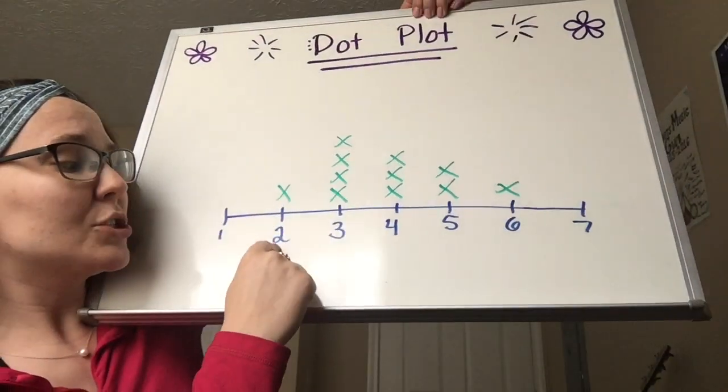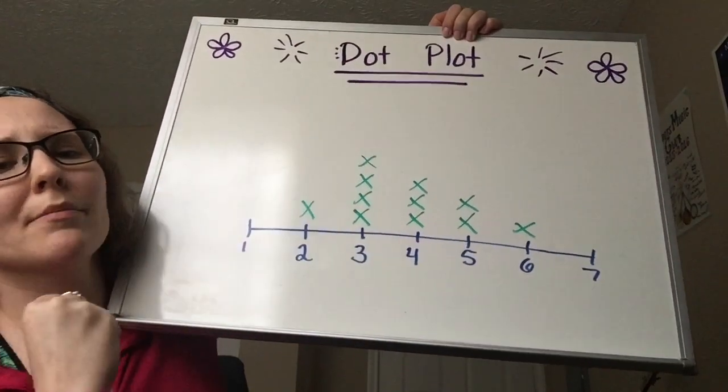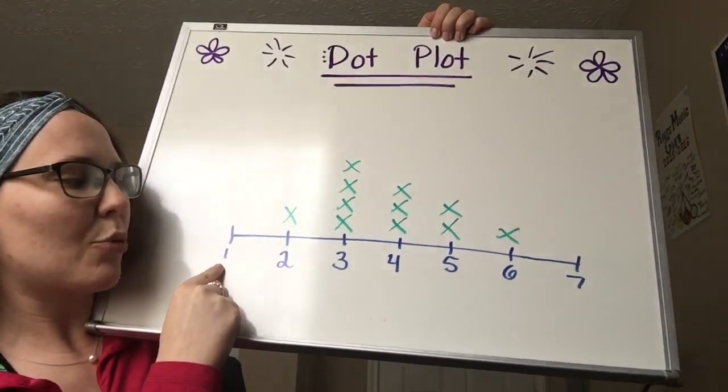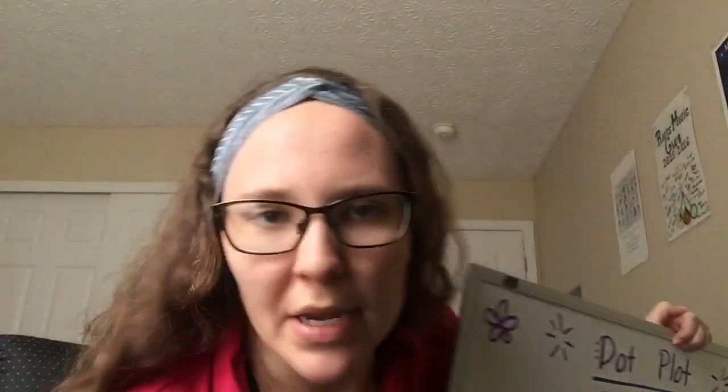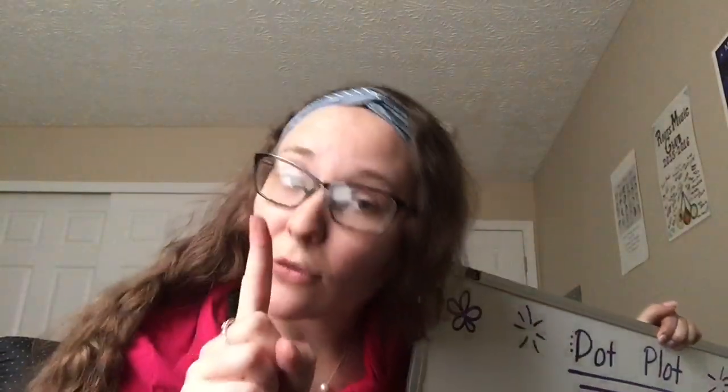Same thing here. Our minimum is two. For the love of math, don't say one. Our minimum is two. There is no data point at one. So, it does not exist in this case. Just because it's on the number line doesn't mean it's in the data set. So, be careful.